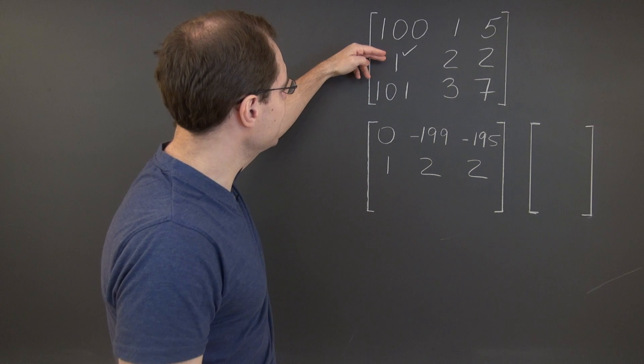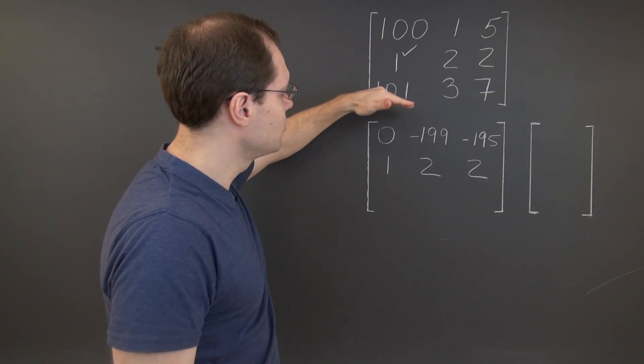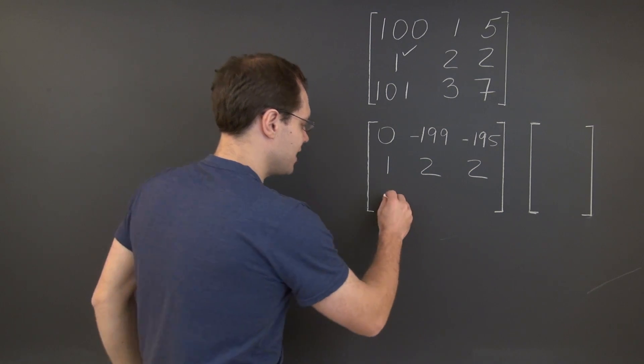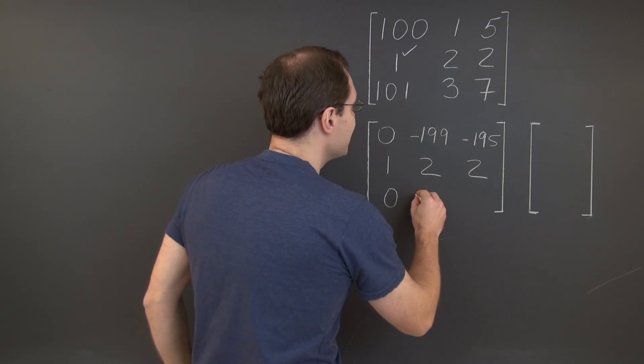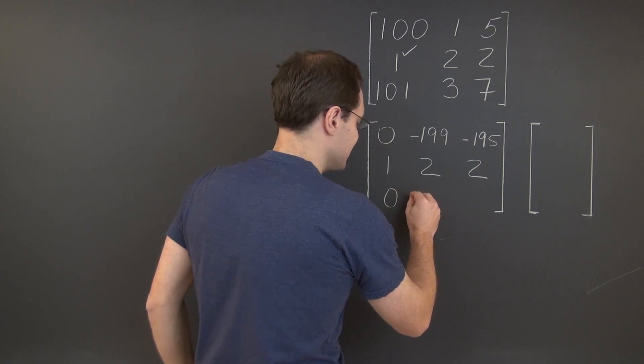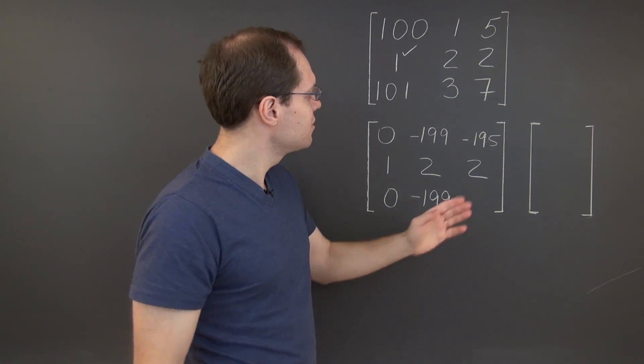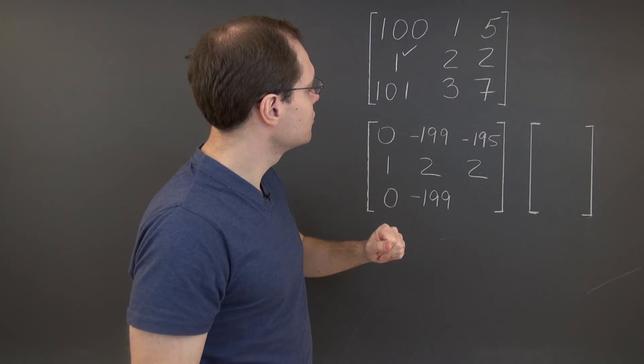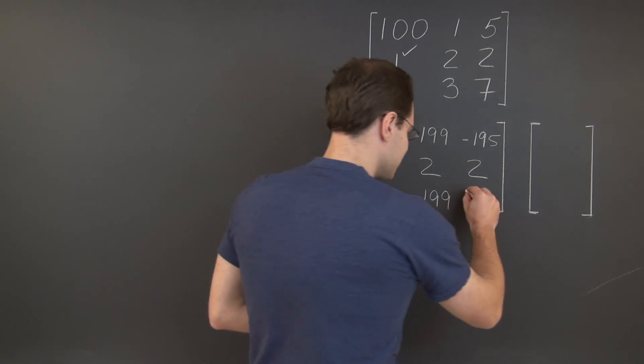So here we go. So we now have to subtract 101 of the second row from the third. And we have 0 here. And of course here we will get minus 199. And in the last entry, we have to have minus 195 once again, minus 195.